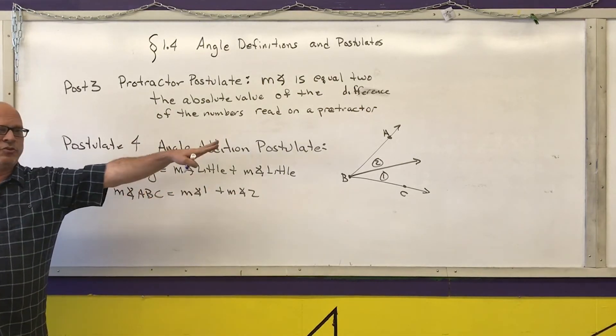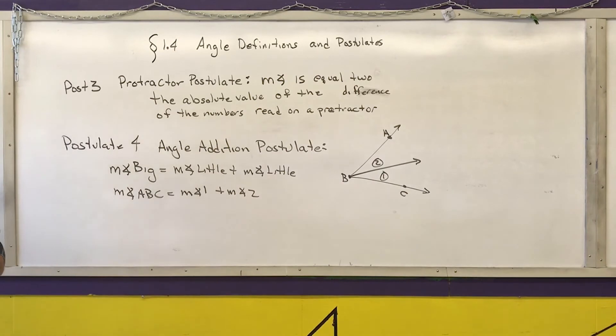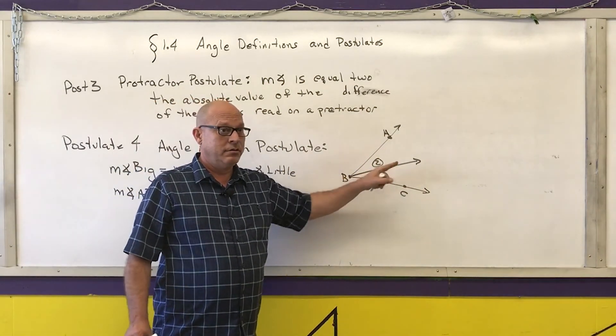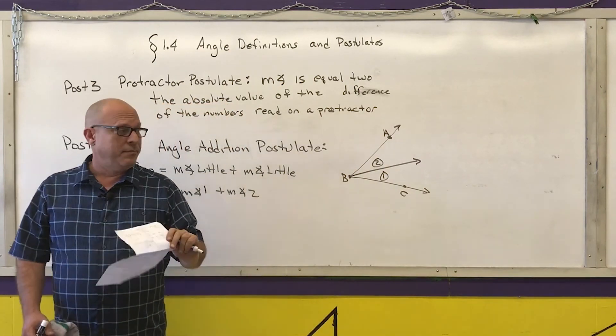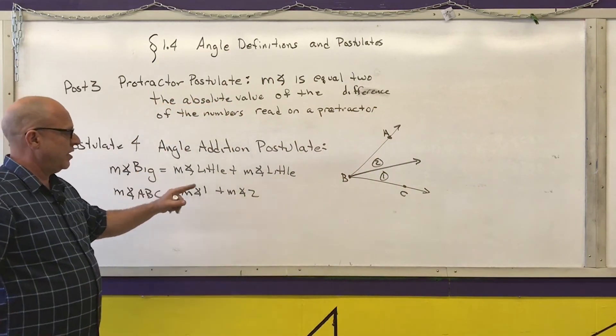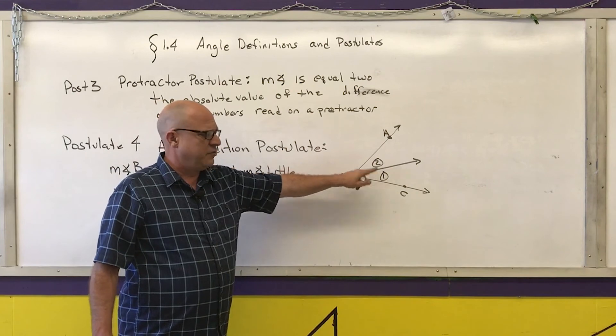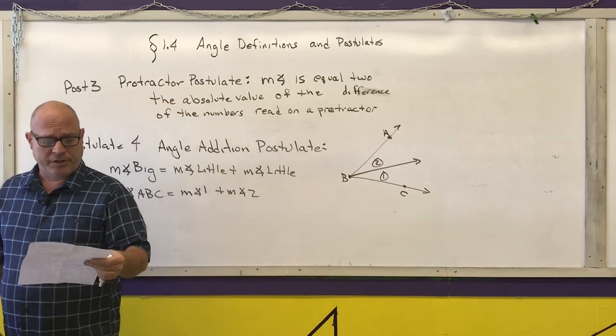We have already talked about angle bisectors. Make sure that you understand that a bisector has to be on the interior of an angle. Same thing with angle addition postulate, these two angles have to be adjacent to each other.